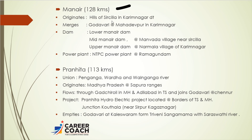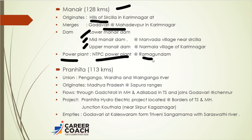The second important Godavari tributary is the Maneru river, 128 kilometers in length. It originates in the hills of Sirisilla in Karimnagar district and merges with the Godavari at Mahadevpur in Karimnagar district itself. Important dams on Maneru are the Lower Maner Dam, Mid Maner Dam, and Upper Maner Dam. The NTBC Power Plant is located at Ramagundam on this river.